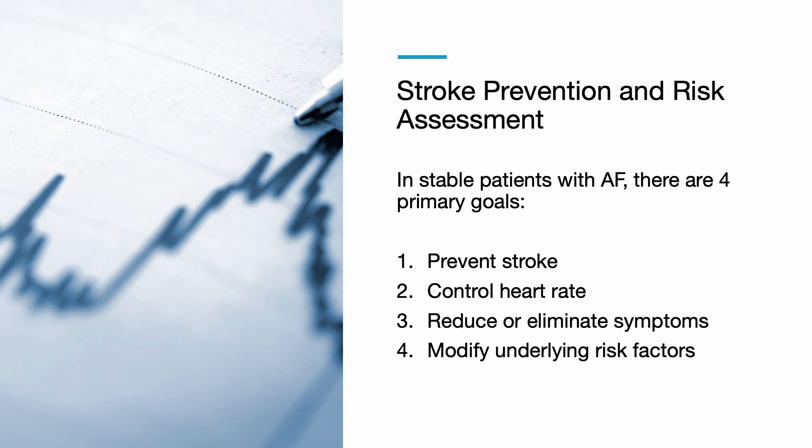In stable patients with atrial fibrillation, there are four primary goals: prevent stroke, control heart rate, reduce or eliminate symptoms, and modify underlying risk factors.